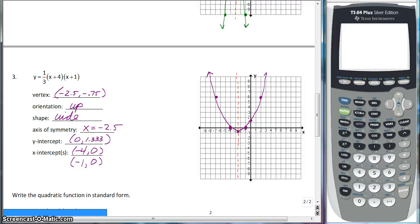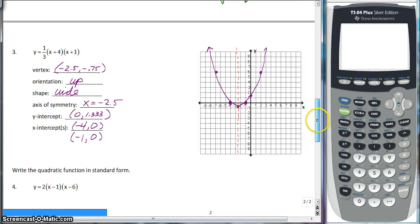Alright, check it. The vertex is negative 2.5 comma negative 0.75. Your y intercept is at 0.1333 or 4 thirds. And of course your axis of symmetry is x is equal to negative 2.5. And your graph should look exactly like mine. Yes, you do need to graph your dashed axis of symmetries.